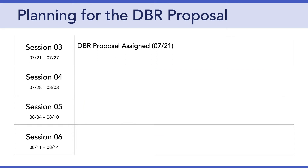Before we get into specifics about the proposal itself, let's take a look at the calendar. With this video, we are entering session three, which means there are four more sessions in front of us. You've already been into Canvas and seen that the DBR proposal assignment has been assigned today. That proposal is going to be due on August 17th. The last day of instruction is Friday, August 14th. However, if you want to take that extra weekend and hand in your DBR proposal on Monday, August 17th, that's totally fine. I will begin grading that Monday because grades are due on Tuesday, August 18th.